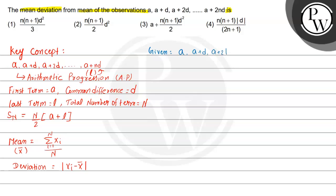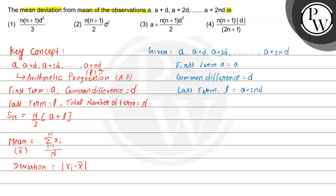Now applying this to our given series a, a+d, a+2d, and so on up to a+2nd: the first term is a, the common difference is d, and the last term is a+2nd. So the total number of terms is 2N+1. This is our given data, and we need to find the mean deviation.